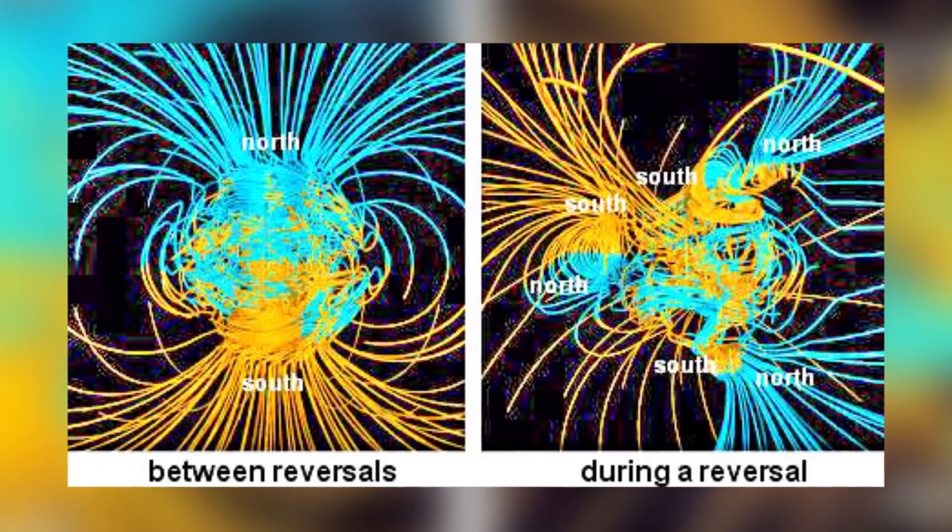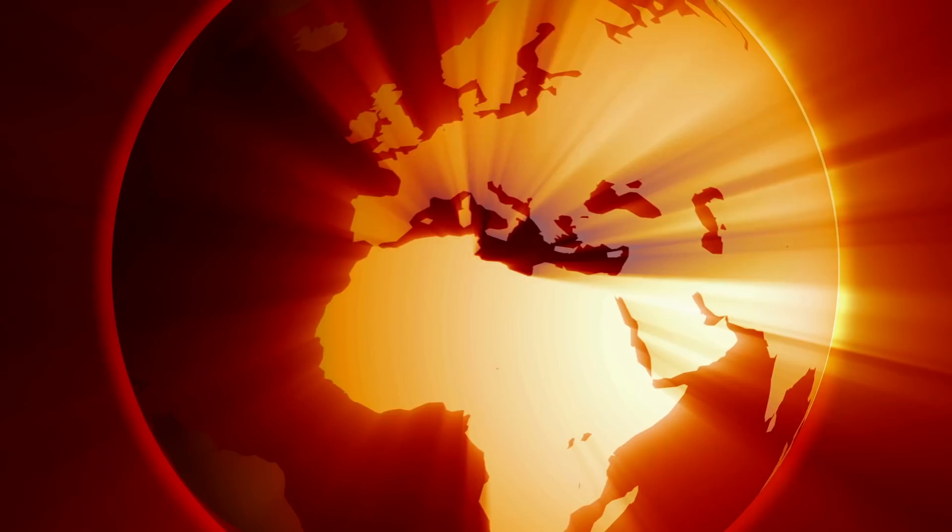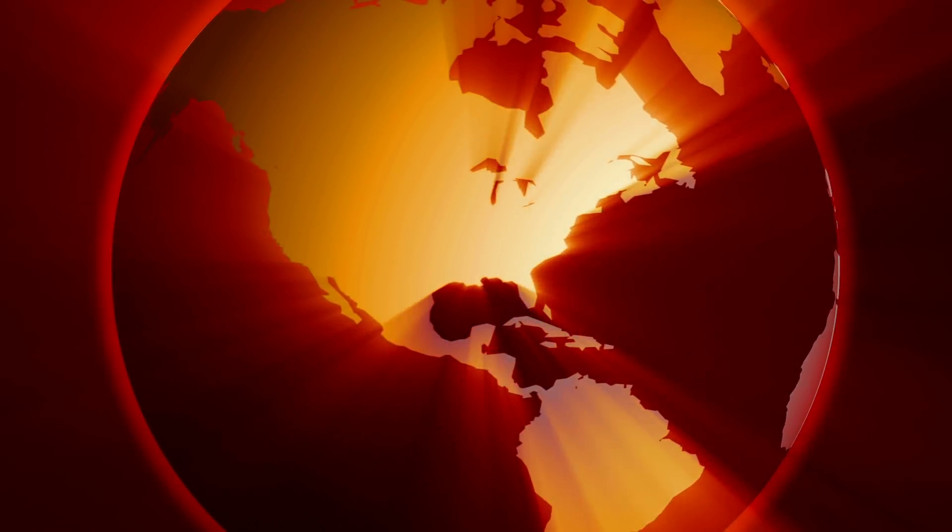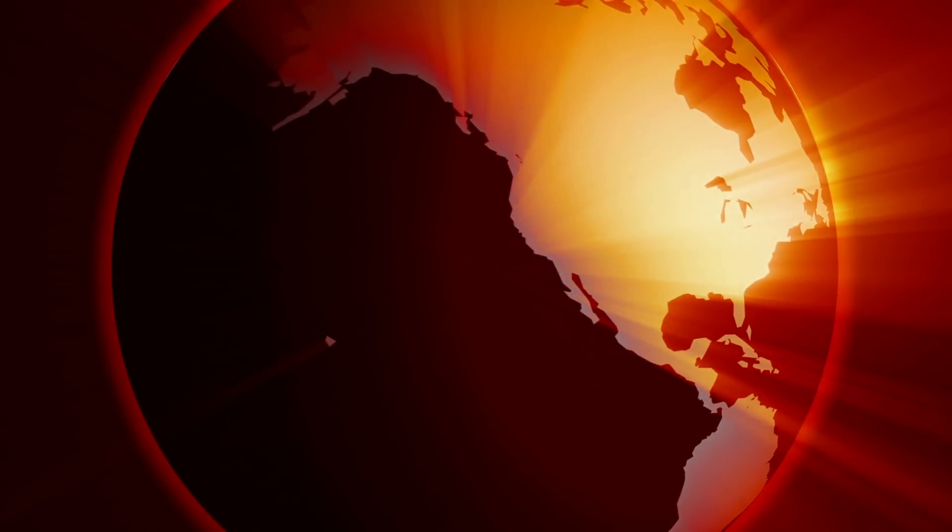When the magnetic poles flip, north becomes south, and south becomes north. But a lot more will happen than just compasses pointing south. In fact, many say that the poles flipping could mean the end of the world as we know it.